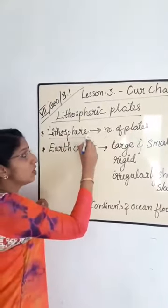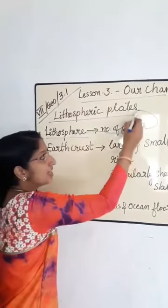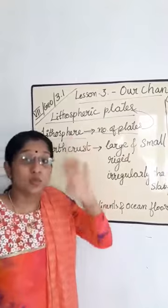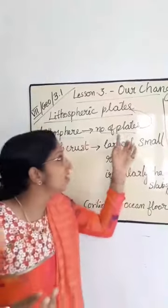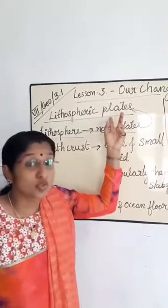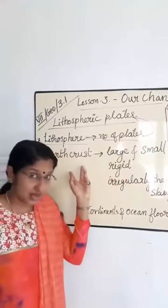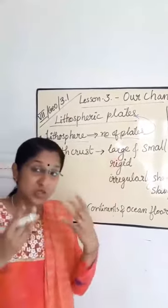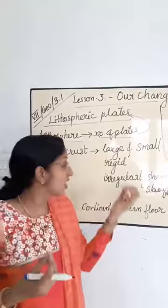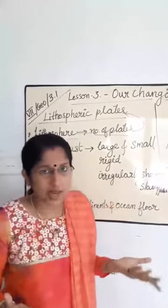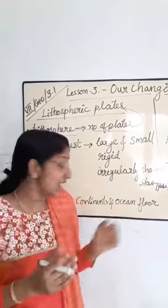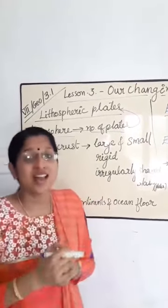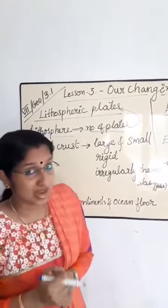Lithosphere is broken into a number of plates, known as lithospheric plates. The Earth's crust consists of large and small, rigid, irregularly shaped slabs or plates, which carry the continents and oceanic floor. These are defined as lithospheric plates.